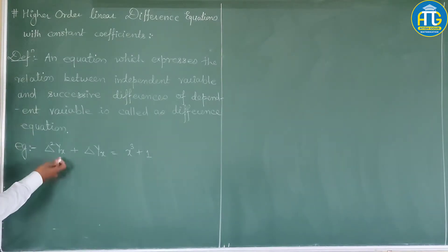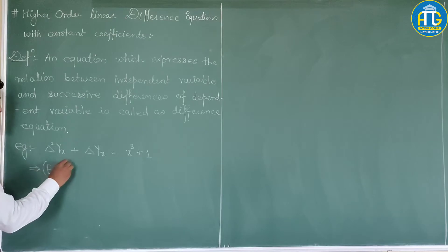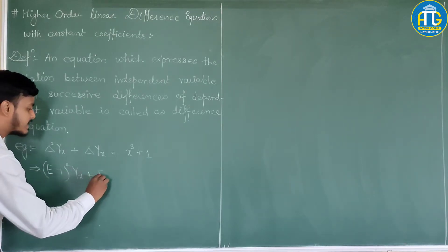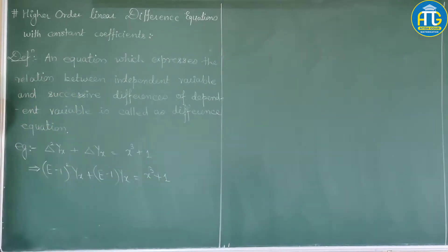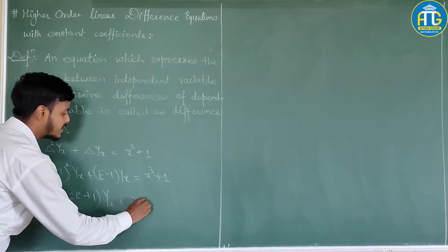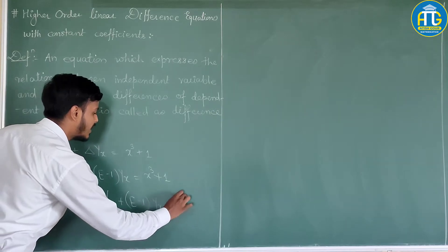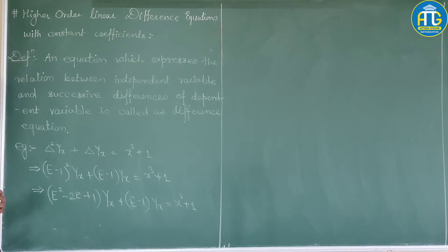You can also write the same example in terms of the shifting operator. As you know, delta equals E minus 1, so you can write it as (E minus 1) squared y(x) plus (E minus 1) y(x) equals x cubed plus 1. Expanding: (E squared minus 2E plus 1) y(x) plus (E minus 1) y(x) equals x cubed plus 1. This is nothing but another form of the difference equation.